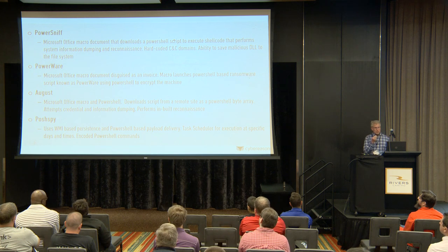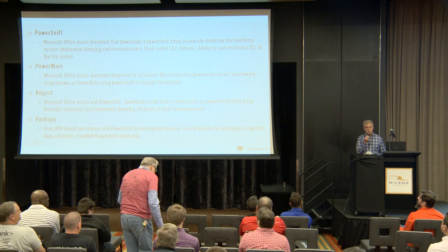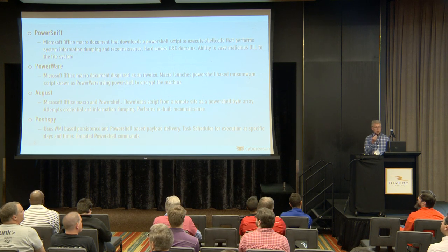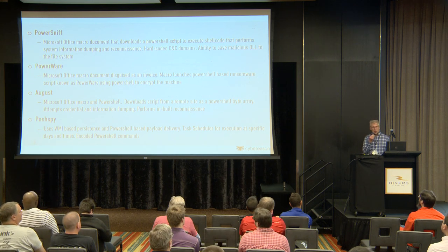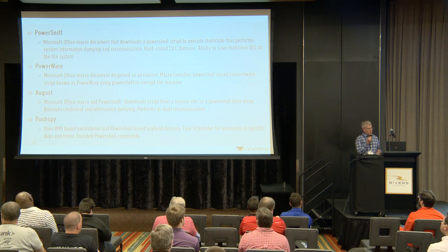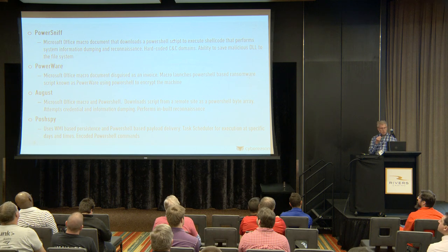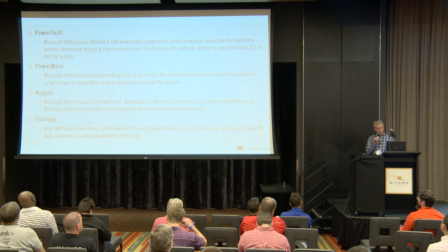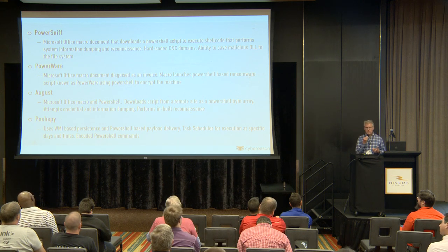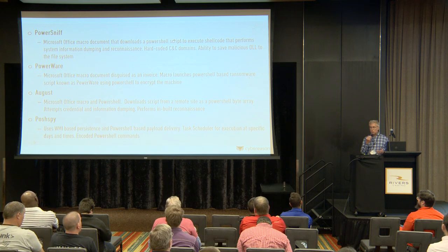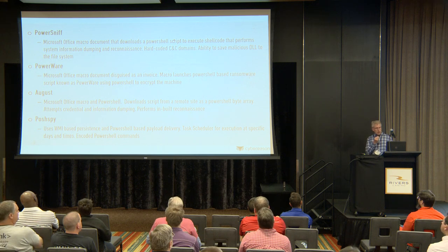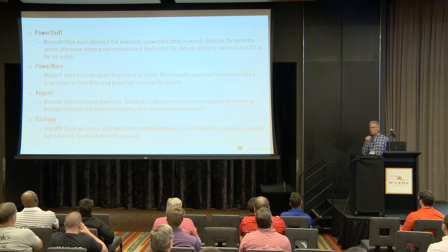August was a unique one — attackers always try to obfuscate the data, whether it's base64 encoding on PowerShell, XOR encoding, or compression. August used a PowerShell byte array, which PowerShell interprets just fine, but to de-obfuscate it takes considerable time to find out what the real command was. Posh Spy, which Brian Satira also talked about, was one of the first to start using WMI. We didn't see WMI a lot before because PowerShell is ubiquitous in almost all Windows environments going back to Windows Server 2003, but WMI is starting to pop up more.